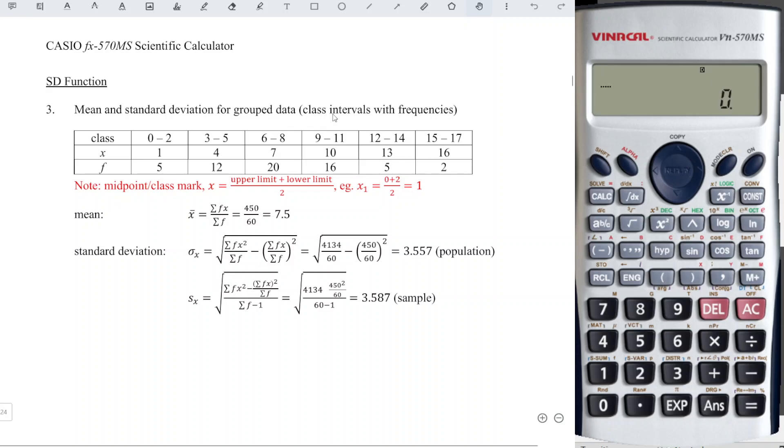If we are given class intervals as shown, what we have to do here is to first obtain the midpoint or the class mark for each class. For example, for the first class 0 to 2, to get the midpoint, we can take 0 plus 2 and divide it by 2 and we get 1.